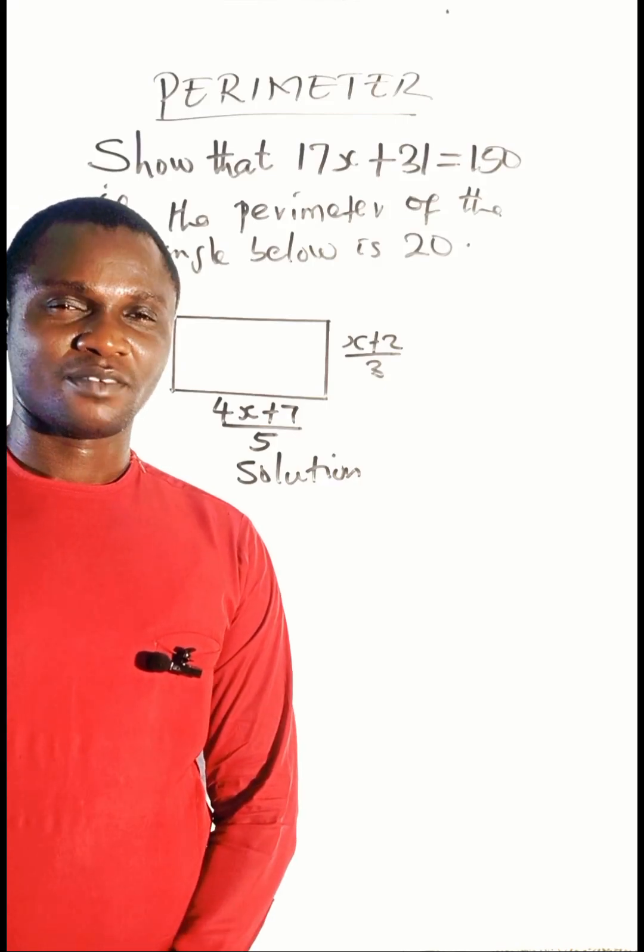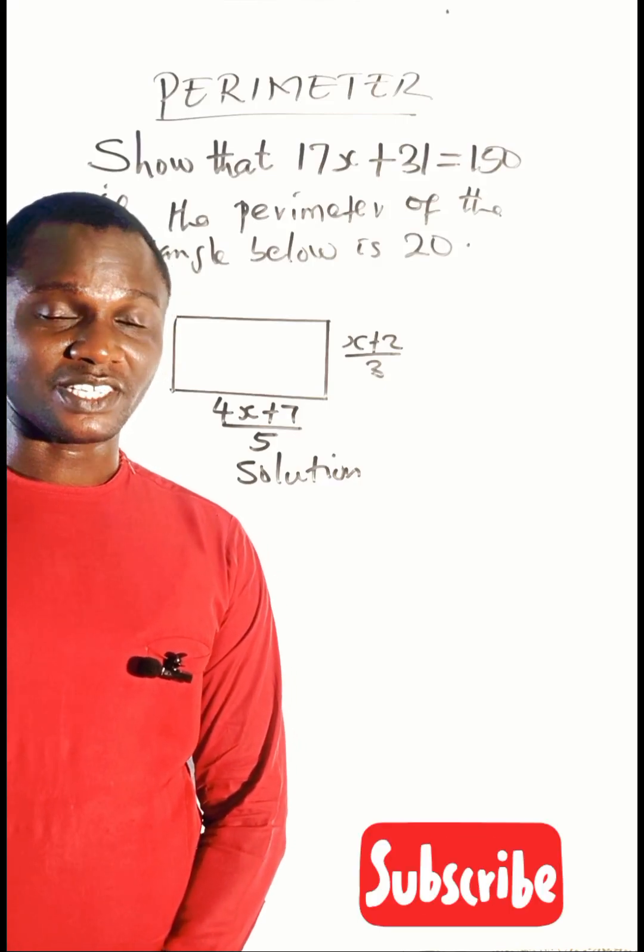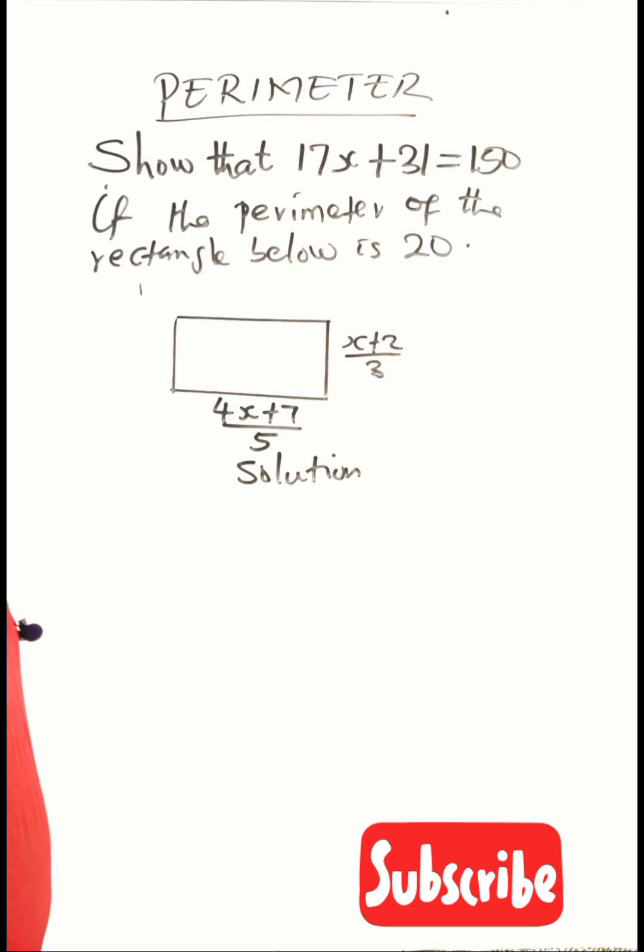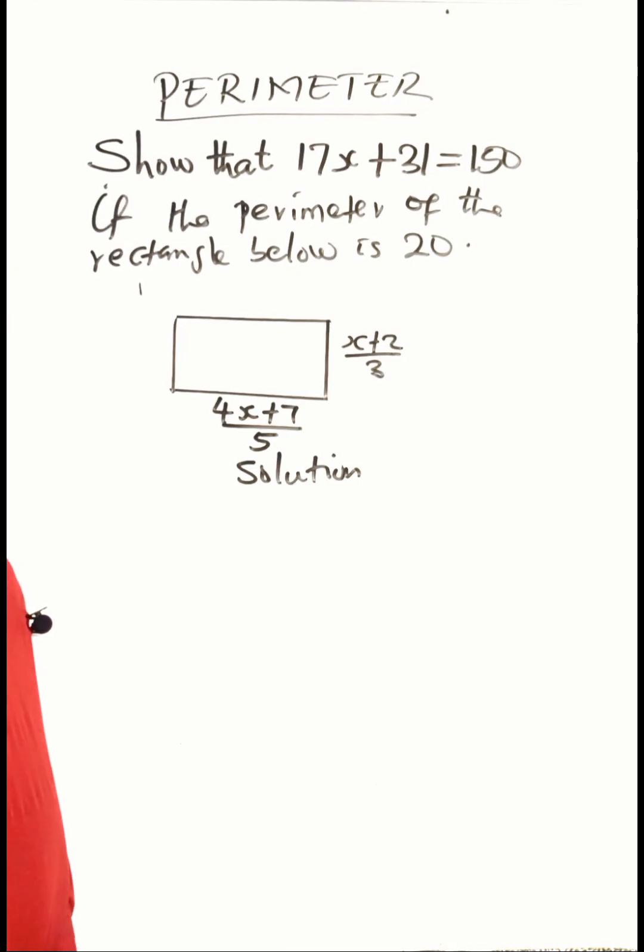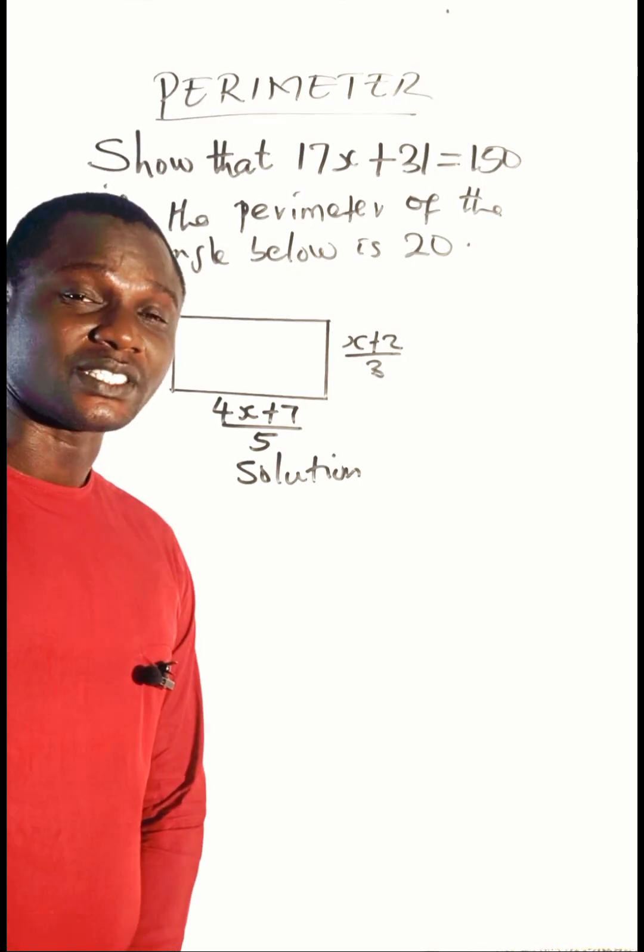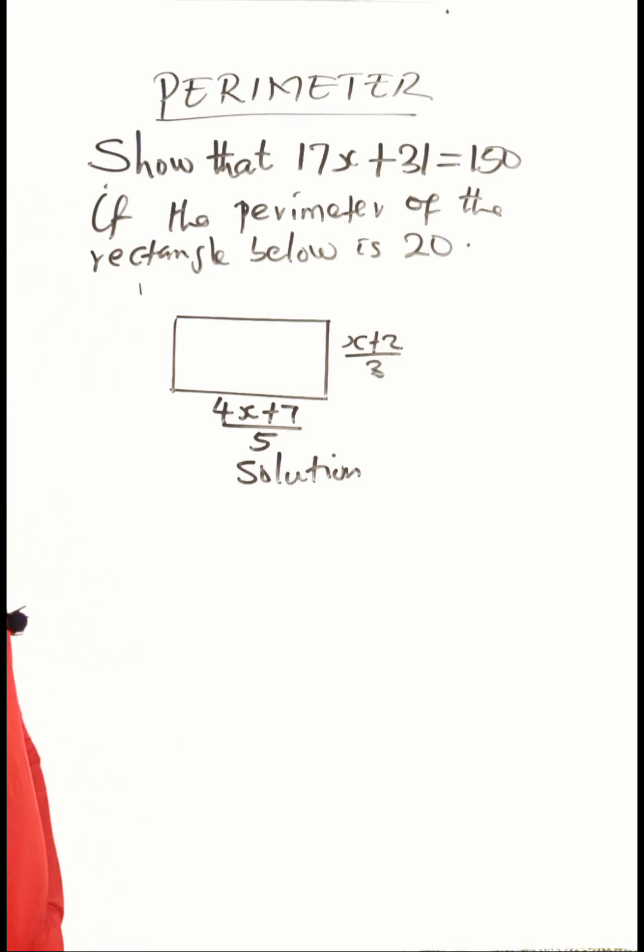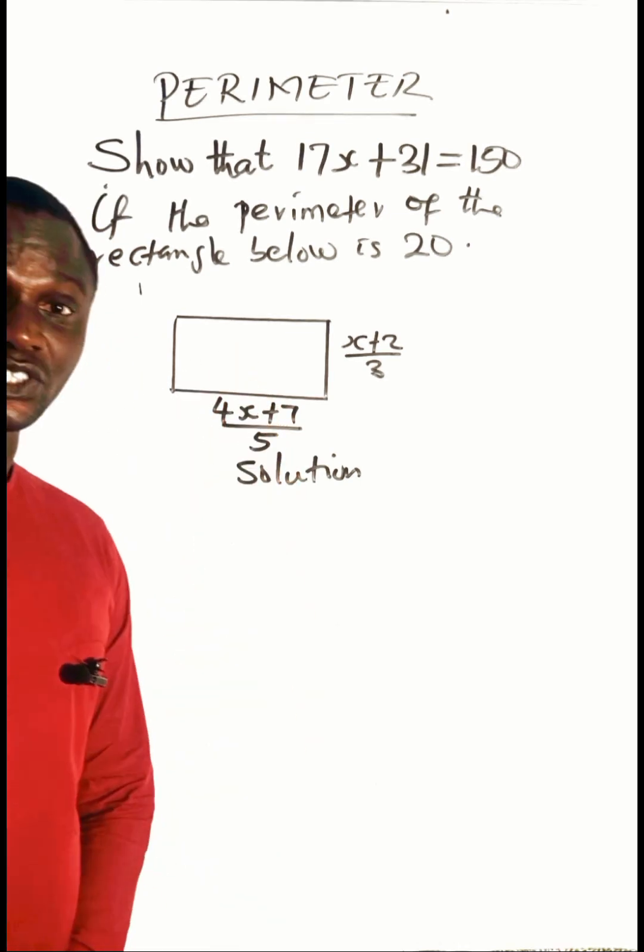Let us solve this problem. Please don't forget to subscribe to the channel. Now the question says show that 17x plus 31 is equal to 150 if the perimeter of this rectangle is 20.